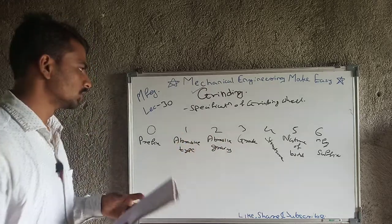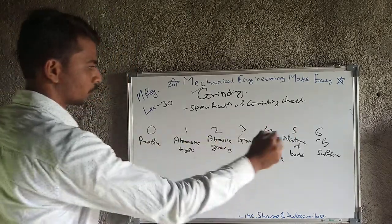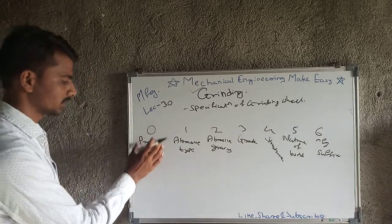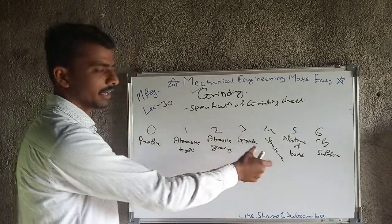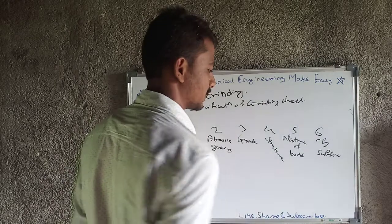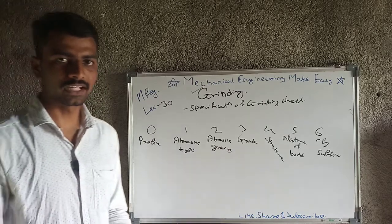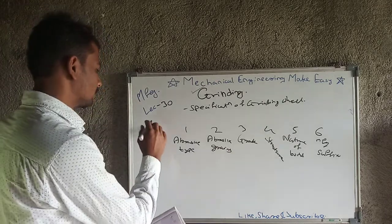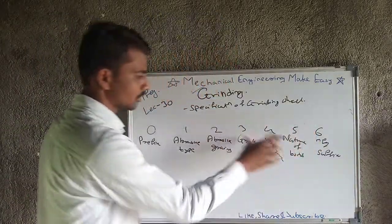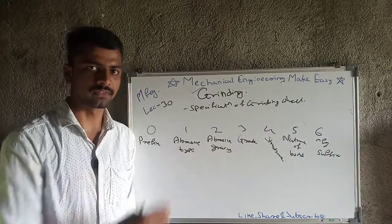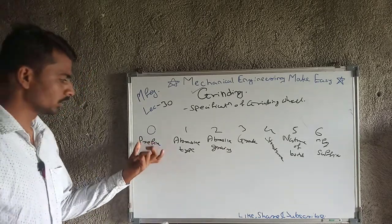The grinding wheel has specifications with seven factors or positions. First is the manufacturing prefix, then abrasive type, abrasive grains, grade, structure, nature of bond, and manufacturing suffix. The prefix and suffix depend on every manufacturer — for example, company XYZ may give their own prefix and suffix — but positions one to five follow standard technical specifications.